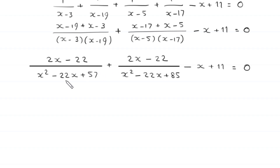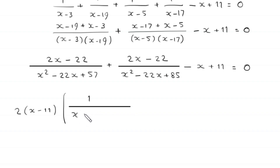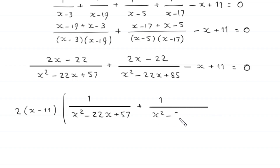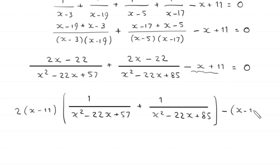From these two terms we can factor out 2 times (x minus 11), giving: 2(x minus 11) times [1 divided by (x squared minus 22x plus 57) plus 1 divided by (x squared minus 22x plus 85)]. And negative x plus 11 can be written as minus (x minus 11), which is also a common factor. So we factor out (x minus 11).